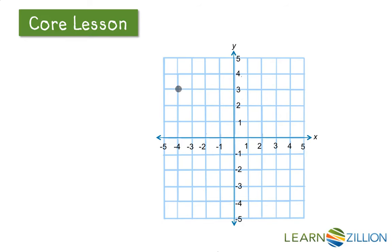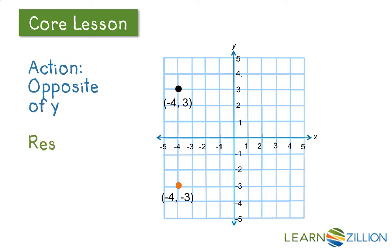So let's start with a point in quadrant 2, negative 4, 3. Let's change the y to negative 3, and now we'll reflect over the x axis and land in quadrant 3.